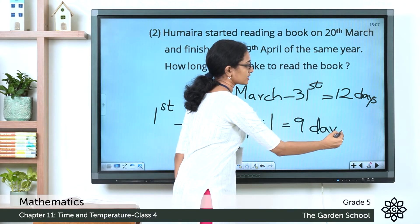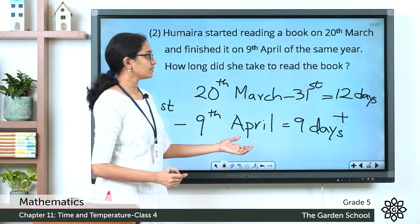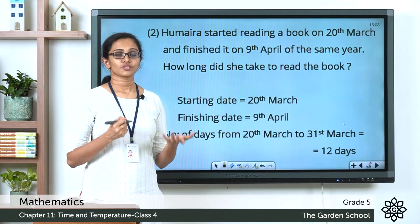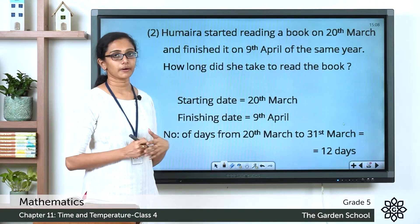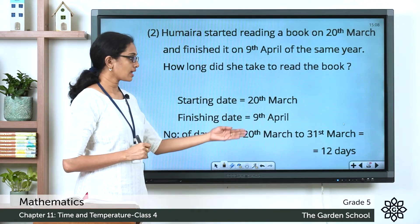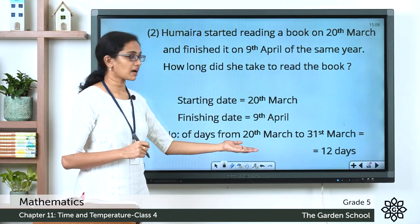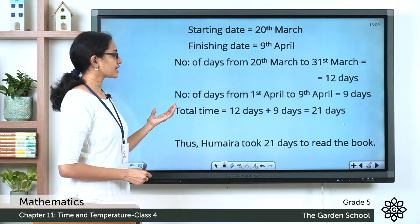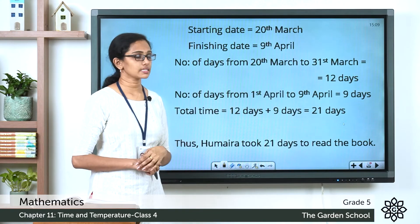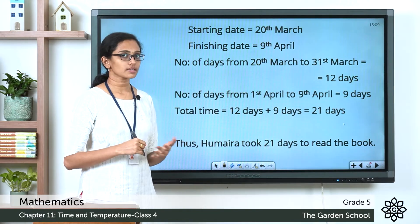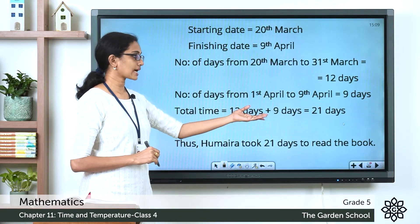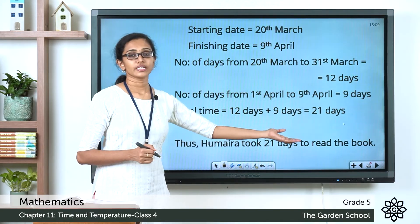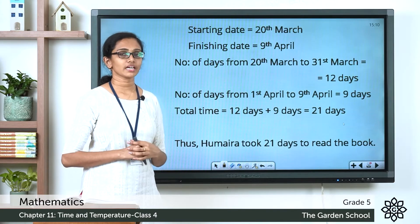If you add these two you will get the total number of days she took to finish reading the book. So the number of days from 20th March to 31st March is 12 days, and the number of days from 1st April to 9th April is 9 days. So the total time equals 12 days plus 9 days, which equals 21 days. Humera took 21 days to finish reading the book. I hope this example is clear to you.